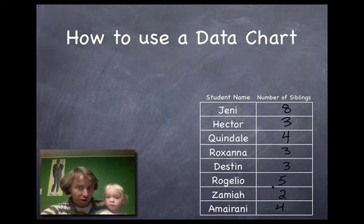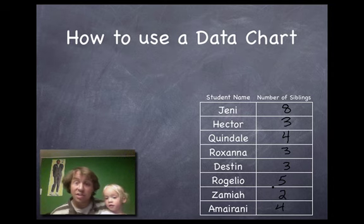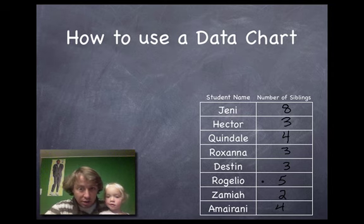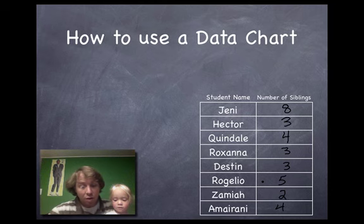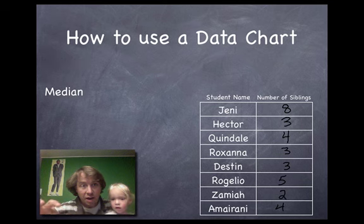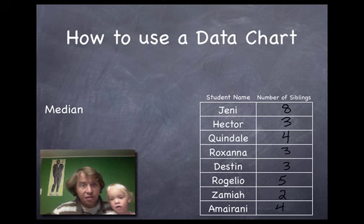Rogelio had 5, Zamaya had 2, and Amarani had 4. So when you are looking at a data chart, you're going to see something like this. Lucy, what are those called right there? What are those? Do you know? Numbers. Yes, they're numbers, okay? And it's telling us the number of siblings that each of these kids have. So we learned the maximum, we learned the minimum, and we learned the range.